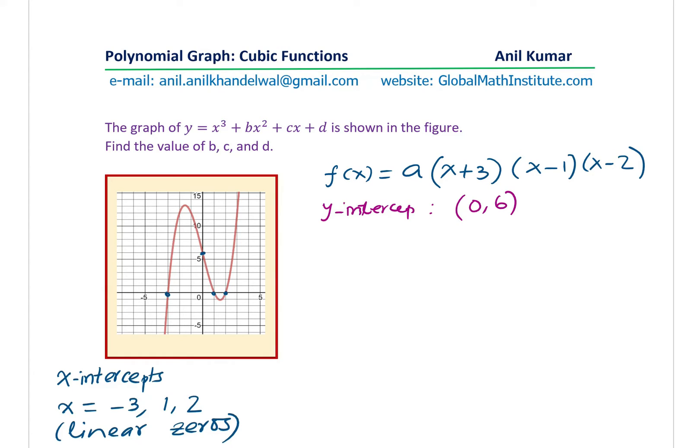So we get here six equals a times zero plus three will be three, times minus one, times minus two. And that is equal to positive three times two is six, 6a.